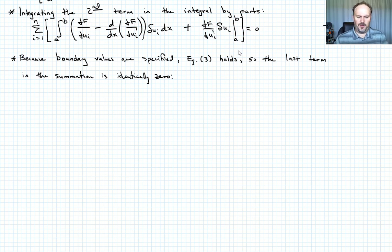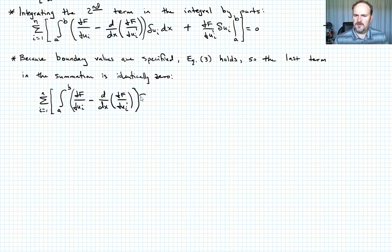So what are we left with when we have that is just this first term. So the sum from i equals one to n of the quantity integral from a to b of partial of f with respect to ui minus d by dx partial of f with respect to ui prime, okay? Let's put parentheses around that, times delta ui dx. All of that is equal to zero. Call this equation eight.